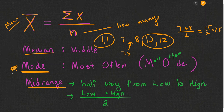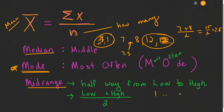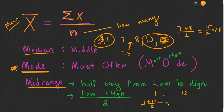The midrange is the halfway point from the lowest number to the highest number — don't confuse that with the median. With the data set 1, 7, 8, 12, we're looking for the midpoint between 1 and 12. The halfway point from 0 to 12 would be 6, but the halfway point from 1 to 12 is 6.5. If we added 1 to 12 and got 13, then cut 13 in half, we get 6.5.